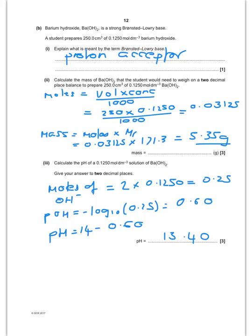Alright, bizarrely they want another definition, but it's a Bronsted-Lowry base, it's a proton acceptor. Calculate the mass of barium hydroxide that the student would need to weigh on a two decimal place balance to prepare 250 centimetres cubed of 0.125 moles per decimetre cubed barium hydroxide. So, you should know this, moles is equal to the volume times the concentration over 1,000. So, you put your volume in, times it by your concentration, divided by 1,000, to give you that number of moles of barium hydroxide that will be in the 250. And then, to find a mass, you just take the number of moles times by the MR of barium hydroxide to give you 5.35 grams. Notice that's to two decimal places, because they've told me it's a two decimal place balance.